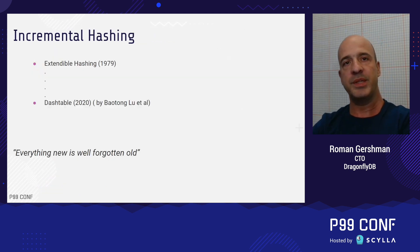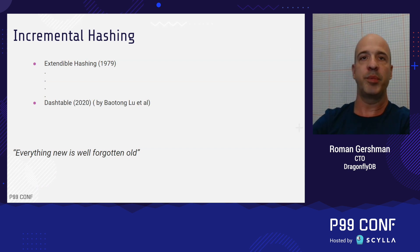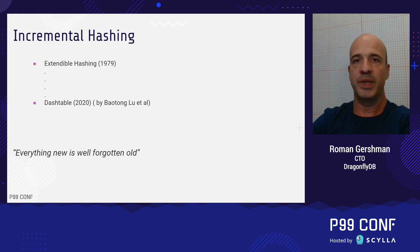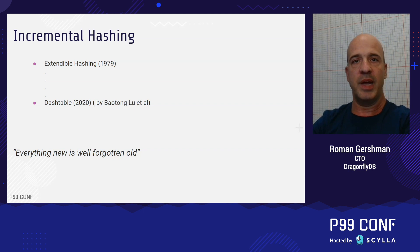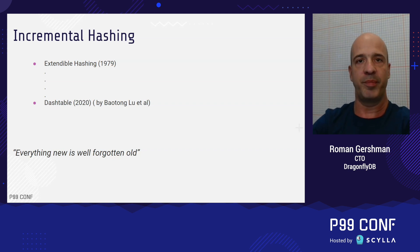This brings us to a data structure called extendable hashing from 1979 and its modern improvement called dash table from 2020. In the next slides, I'm going to explain the idea behind them.